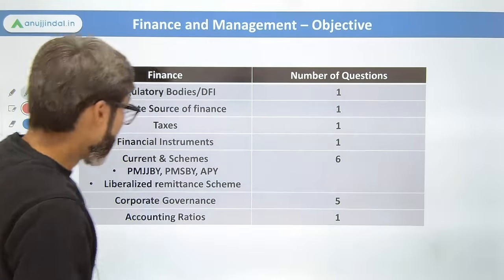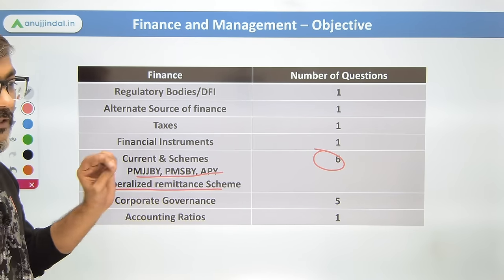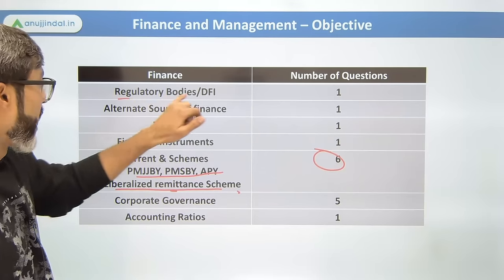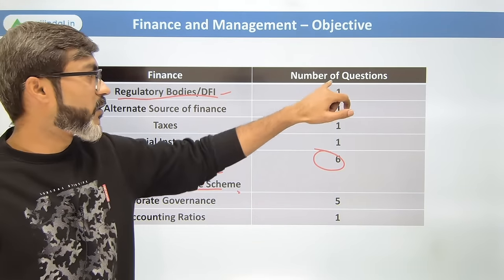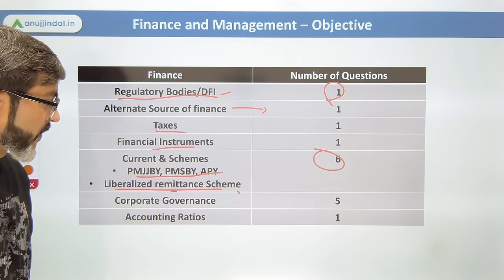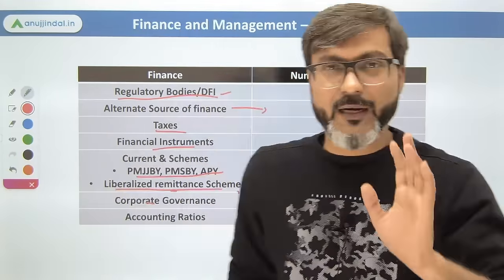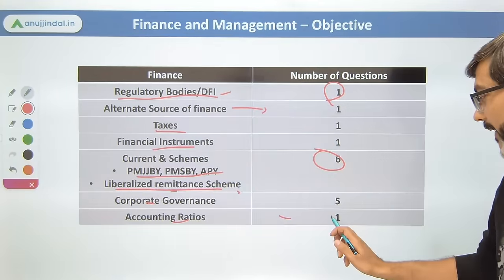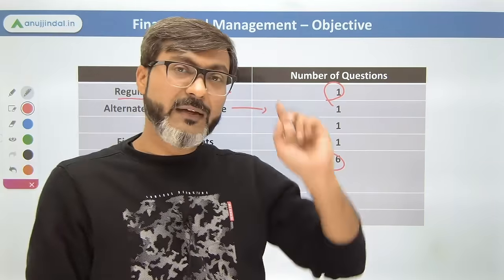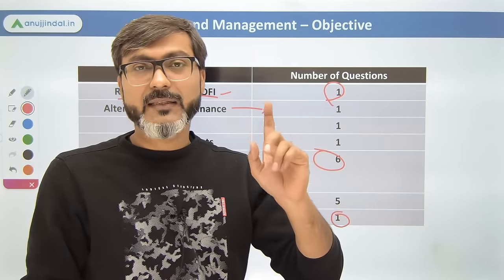In Finance for 2023, financial inclusion remained a key topic. Corporate governance had five questions — it is a very important topic. Accounting ratios also appeared. I expect that in 2024, they are going to increase the number of questions from the accounting and basic finance part.